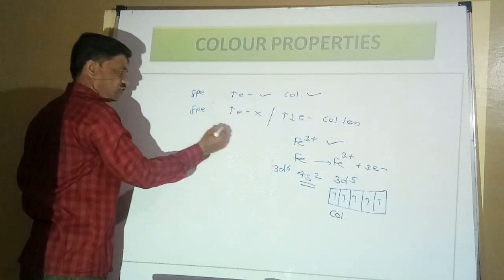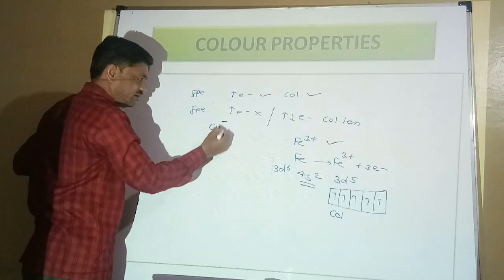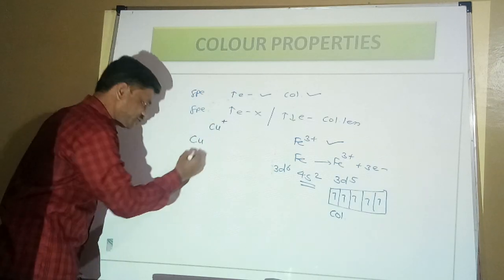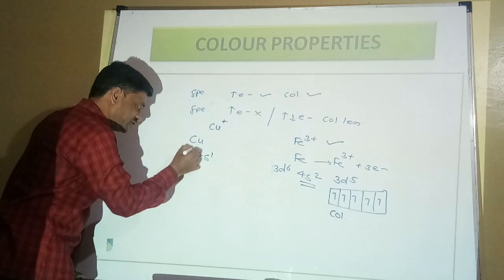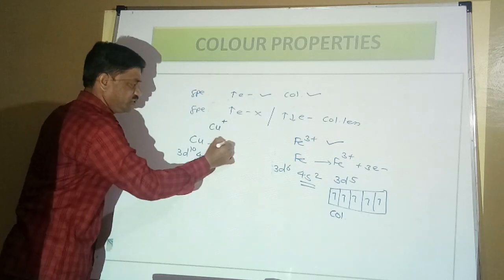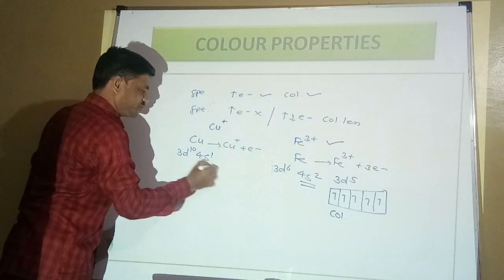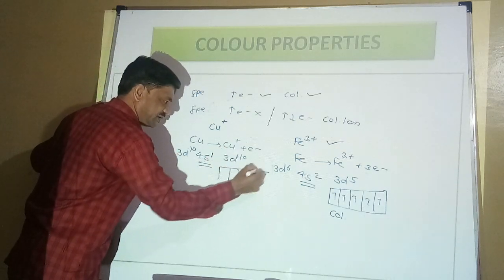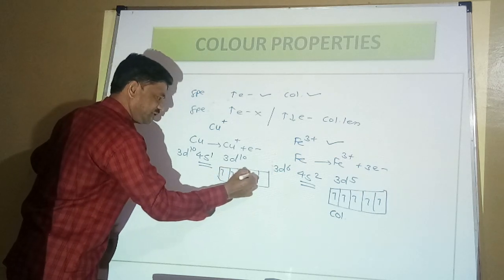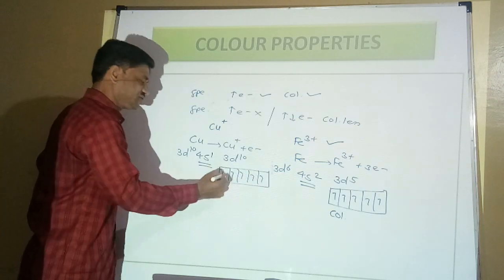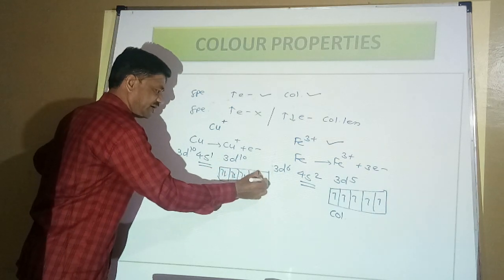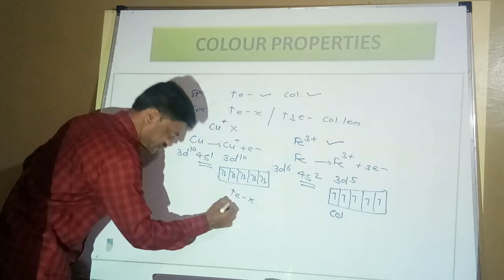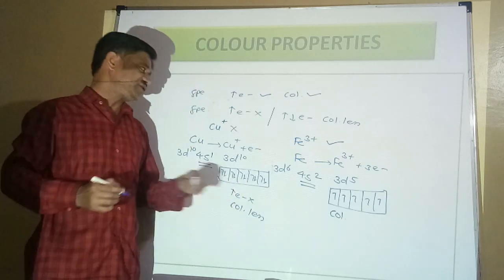Now check the example of Cu⁺. Copper has the actual configuration Ar 4S¹ 3D¹⁰. With a +1 charge, 1 electron is lost from the 4S orbital, leaving 3D¹⁰. In 3D¹⁰, all 10 orbitals are paired — there is an absence of unpaired electrons. So Cu⁺ is found to be colourless.